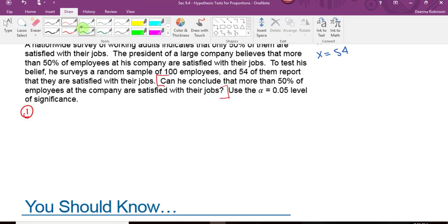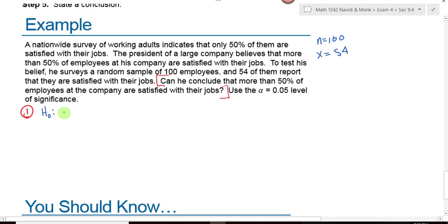What will our null hypothesis be? What's my parameter? P equals 0.5. If you want to put 0.50, that's fine. Your alternative will be what? Our alpha level will be what? 0.05. And then we draw a picture.